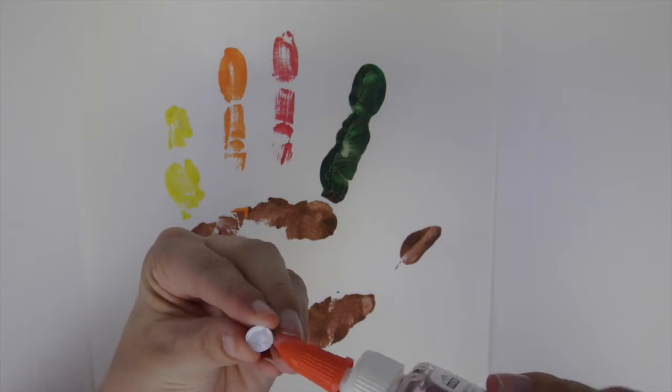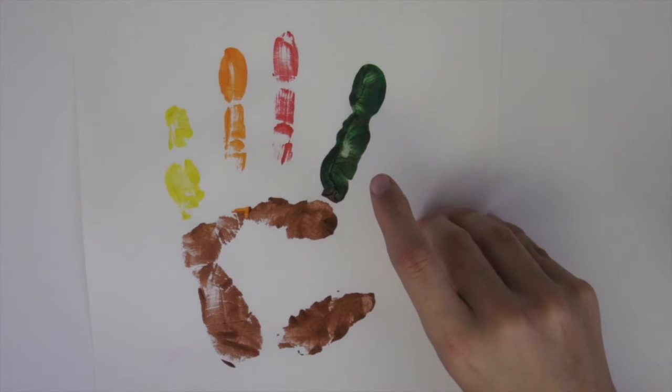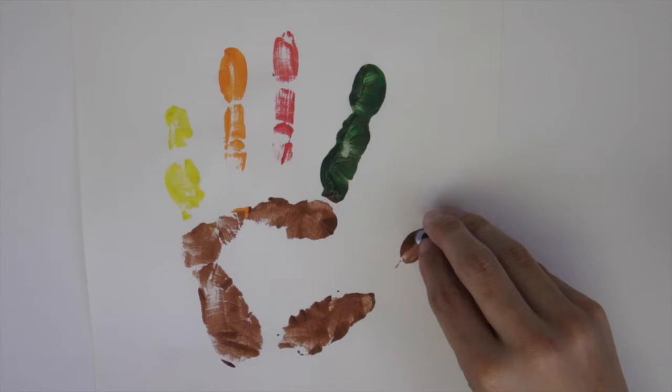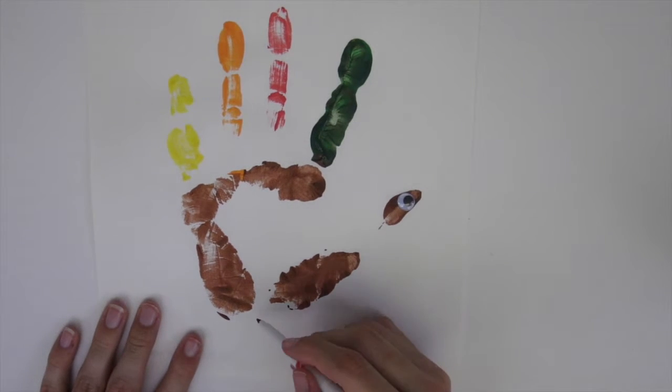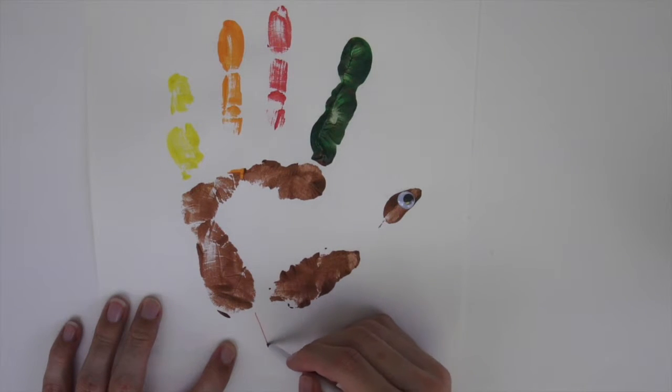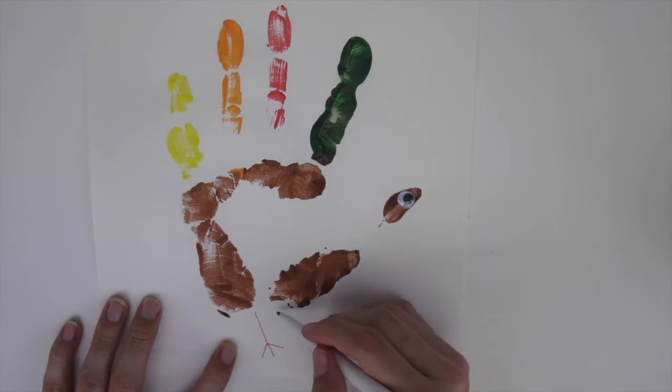Now it's time to bring our turkey to life by adding some features. We're going to start by gluing on a googly eye. Next, we'll add two feet, a beak, and a raindrop shape for the wattle.